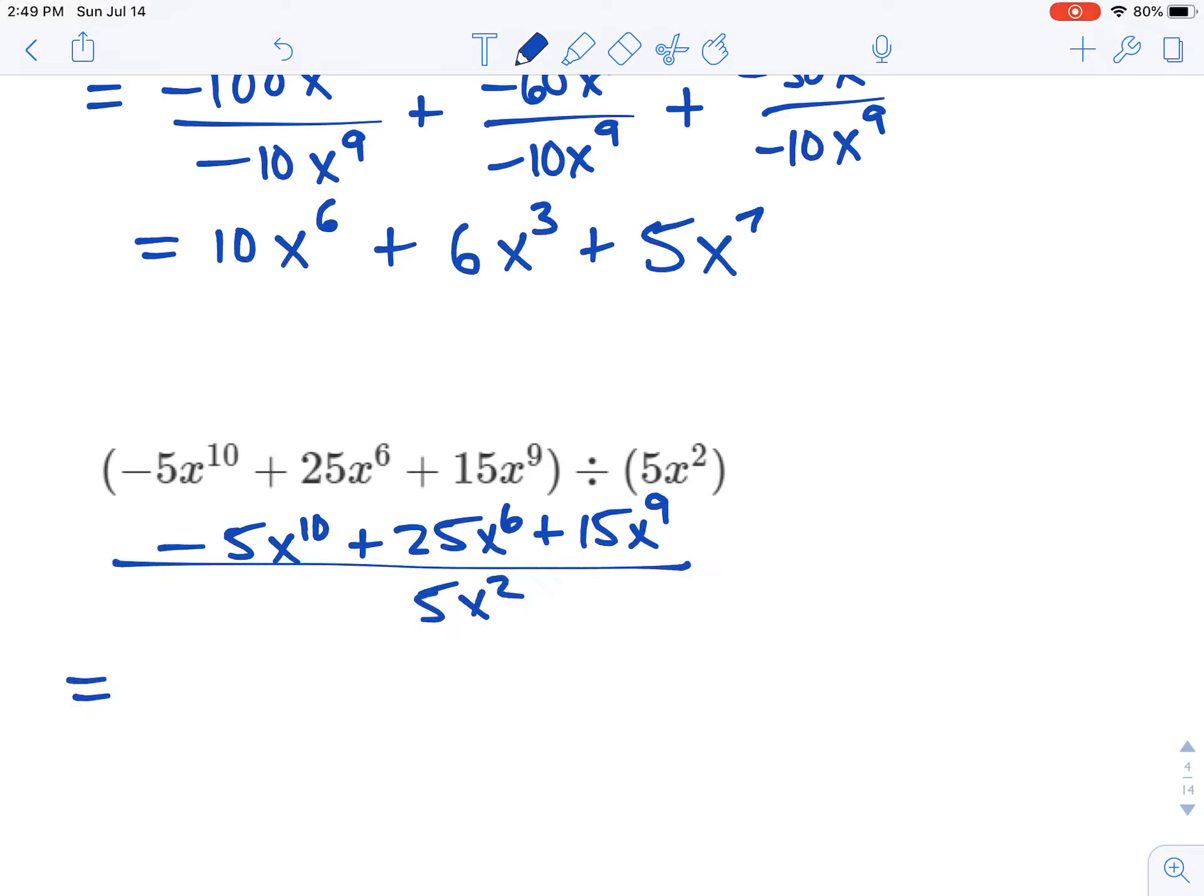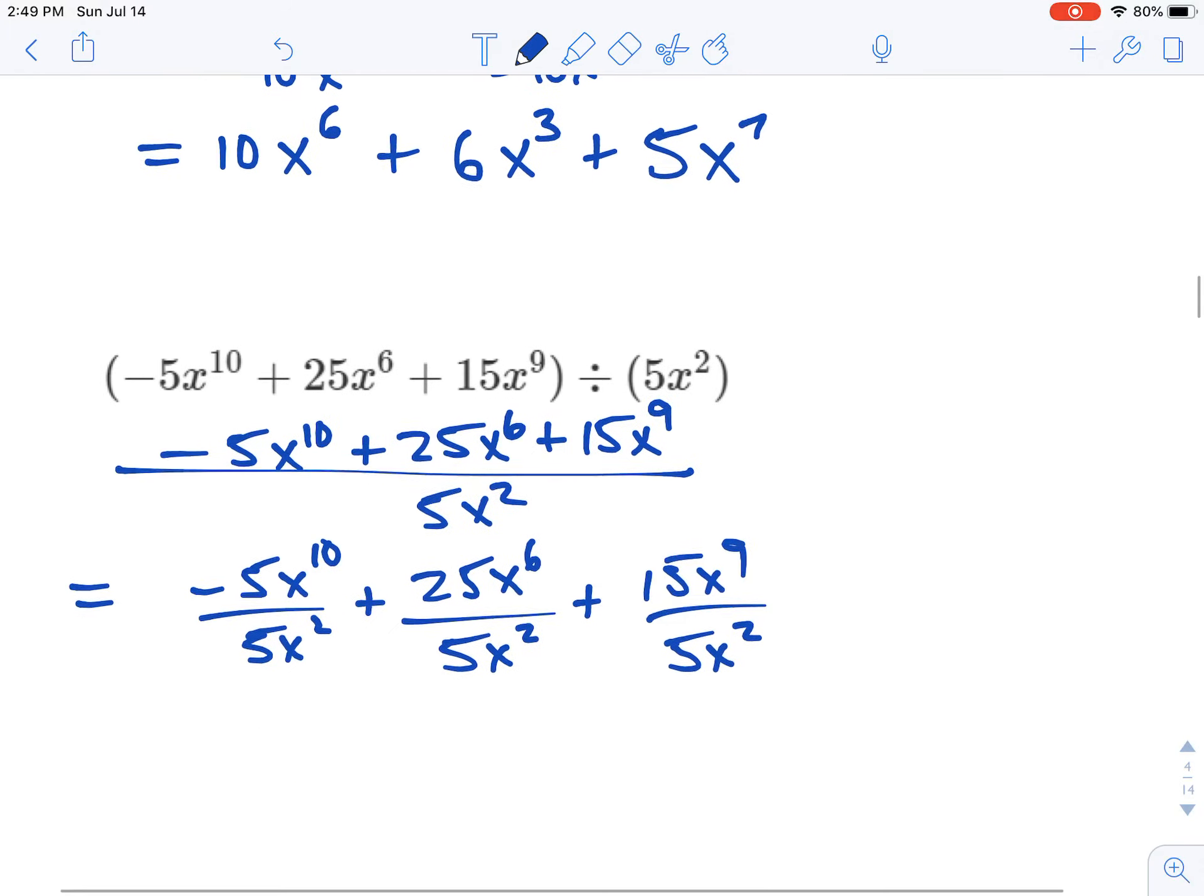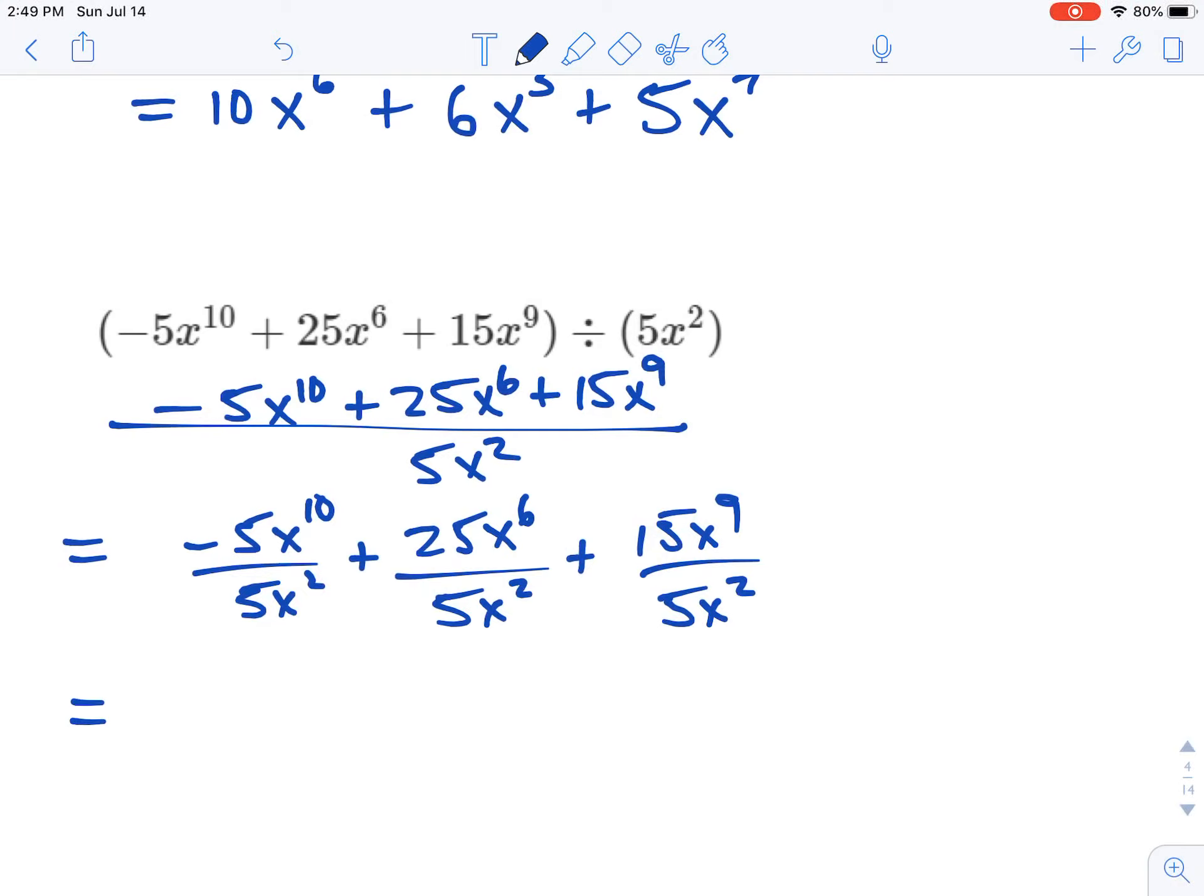And again, we're going to split it up. So negative 5x to the 10th divided by 5x squared plus 25x to the 6th divided by 5x squared plus 15x to the 9th divided by 5x squared. And we'll just divide each piece, and then we'll be done.